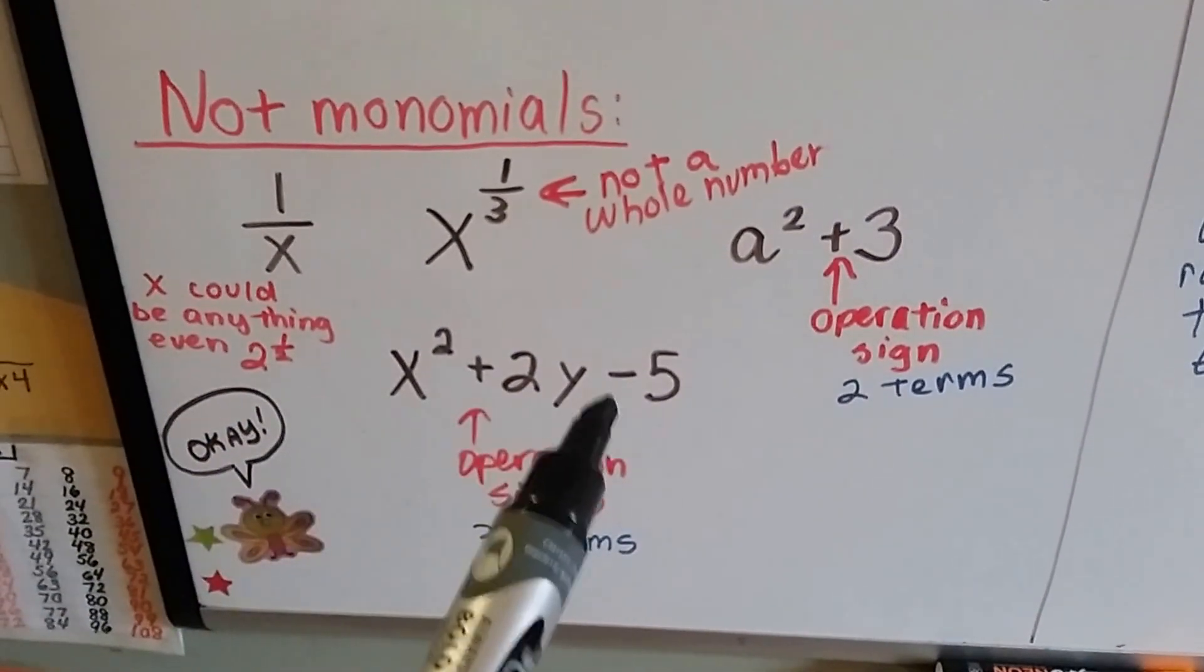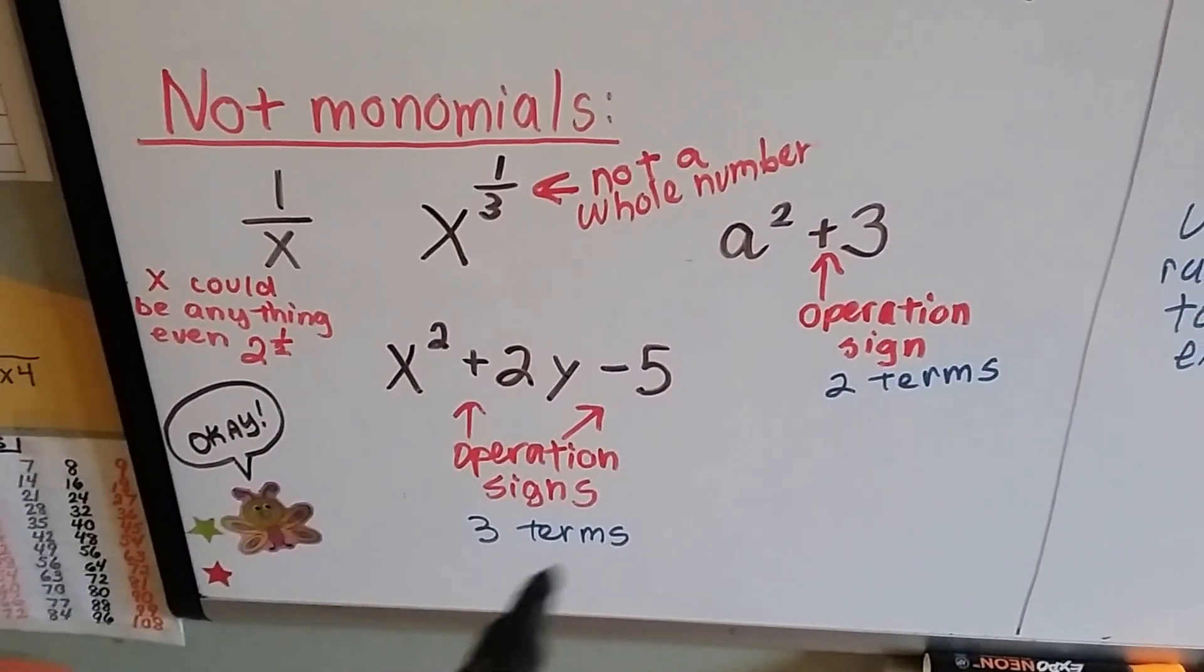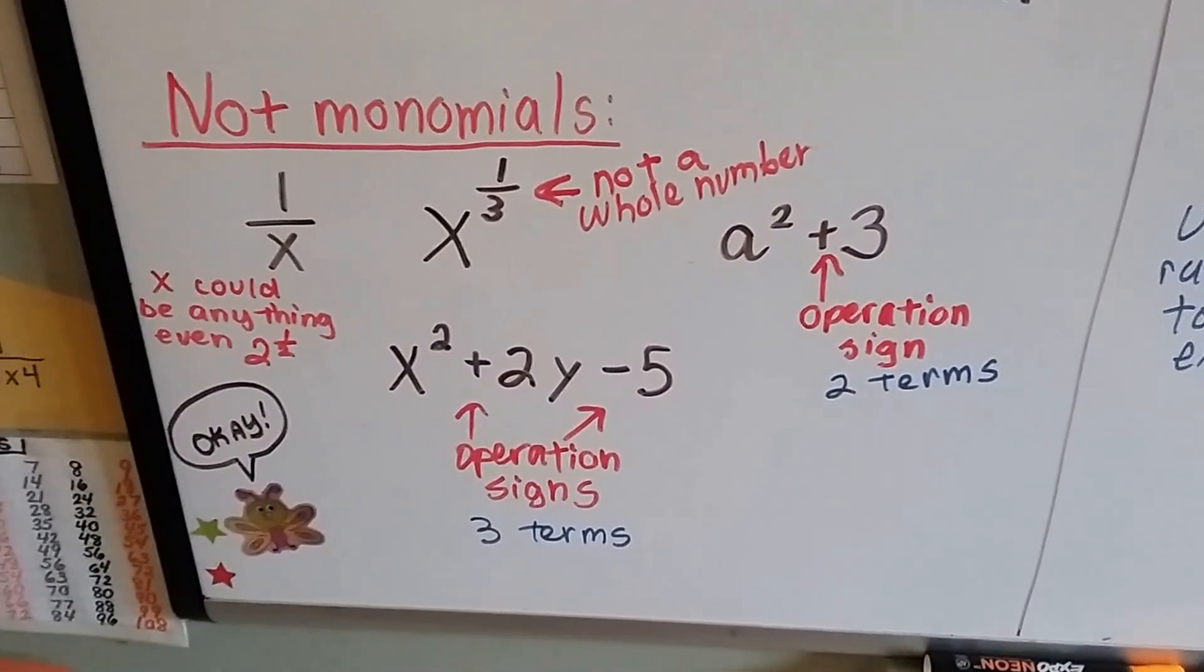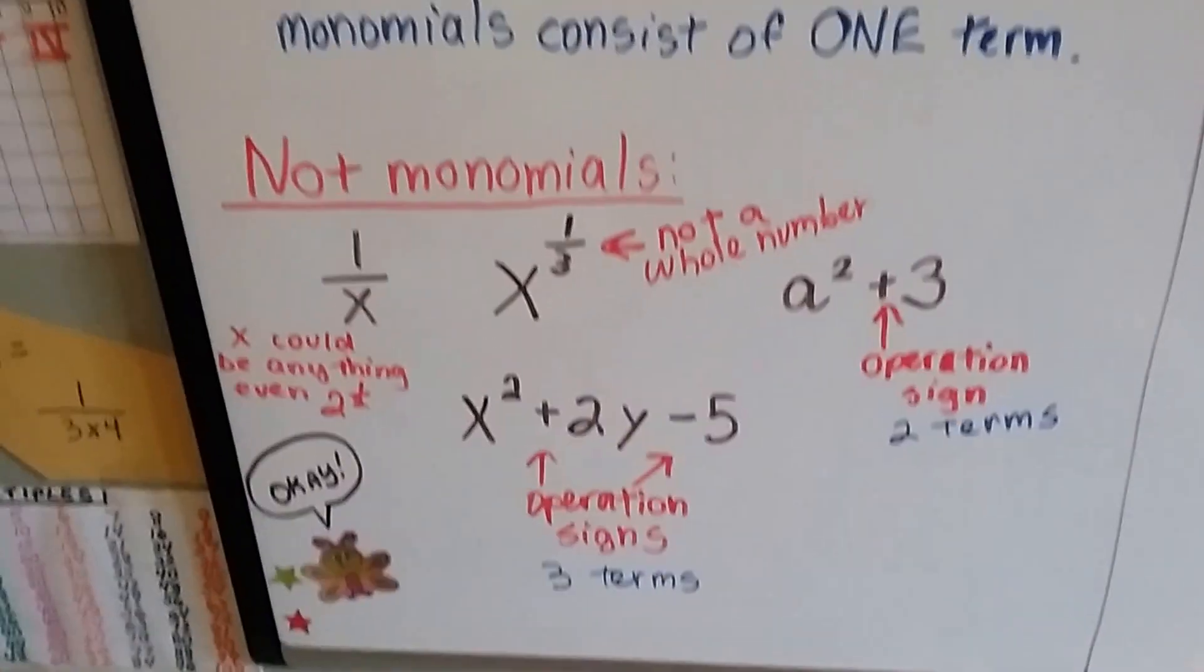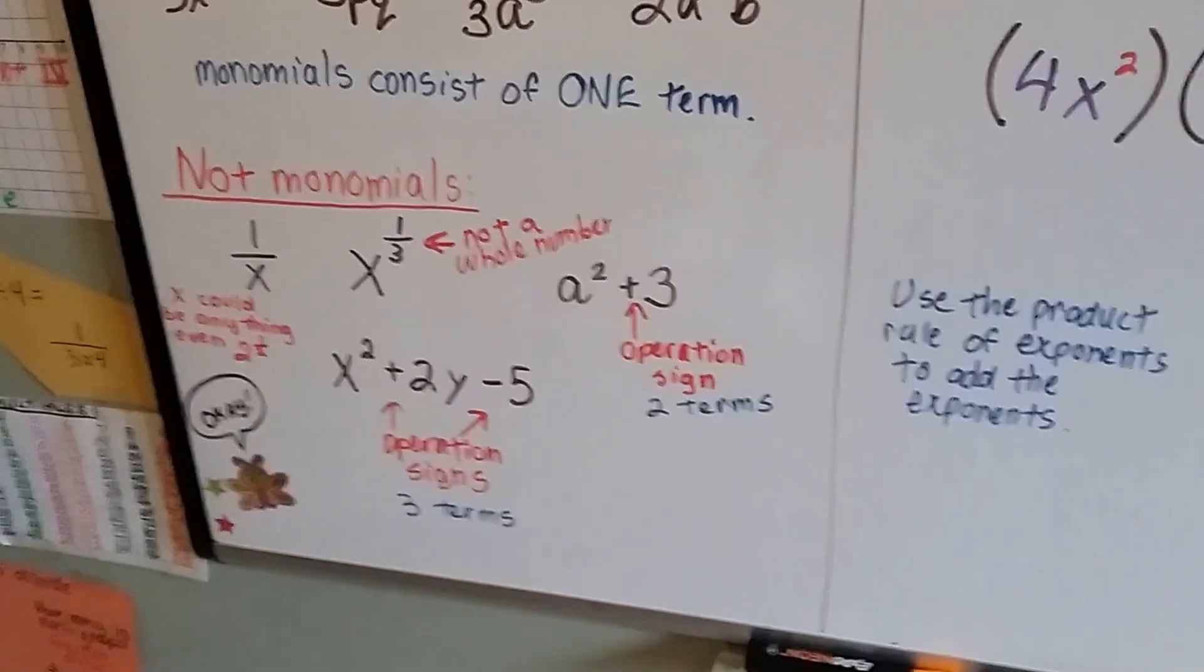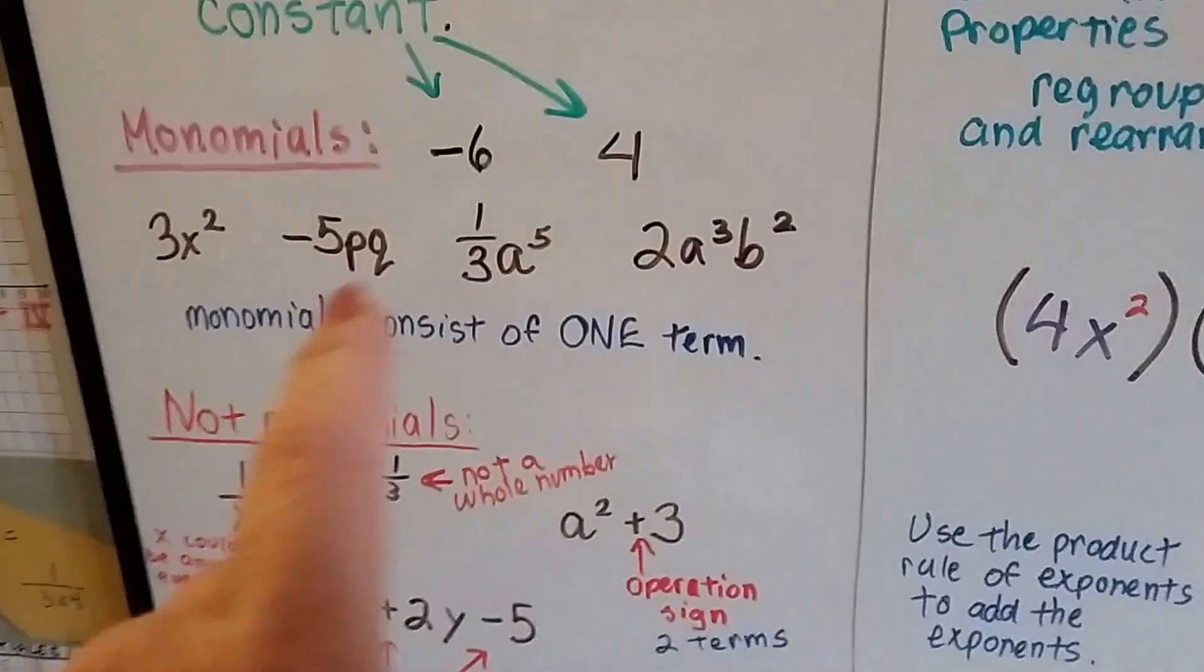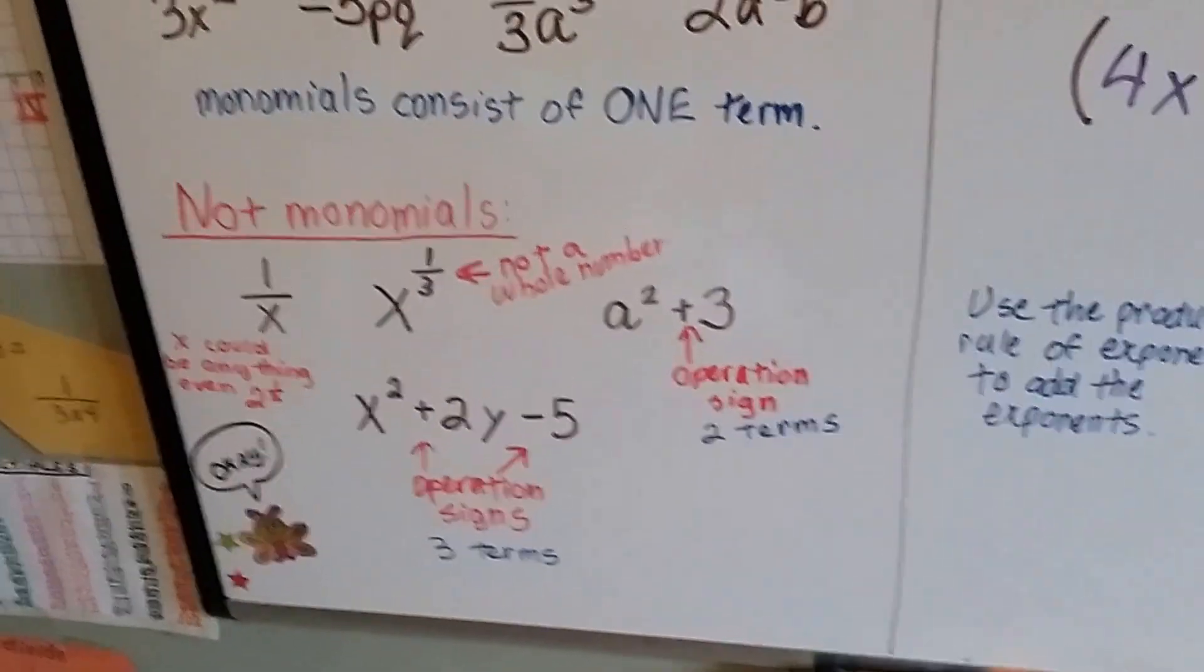x squared plus 2y minus 5, there's two operation signs here. There's three terms, so that's not a monomial. This is actually called a polynomial. Mono means one, and poly means many. So a monomial has one term, where a polynomial has many terms.